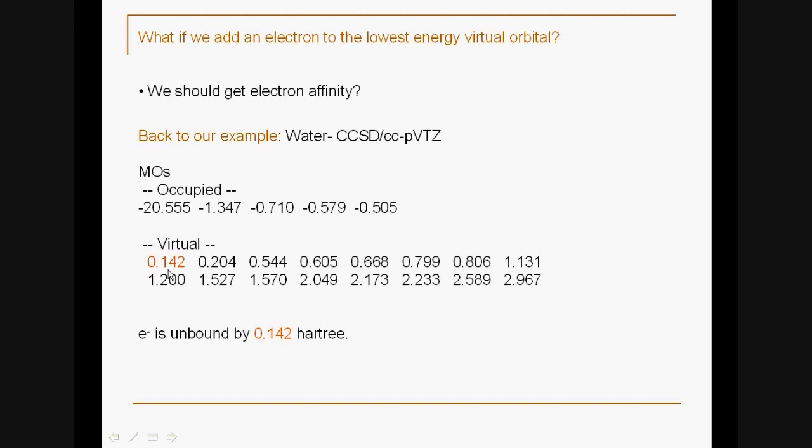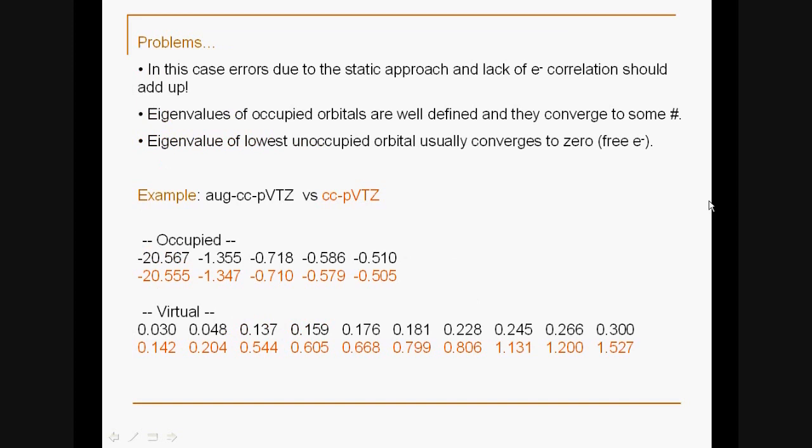Its energy is positive, which means if I put an electron here it will be unbound. When I put the electron, the energy of this orbital should give me the Koopmans' theorem electron affinity. Again, be careful about sign conventions. The electron is unbound by 0.142 hartrees, which means this is the Koopmans' theorem level electron affinity.